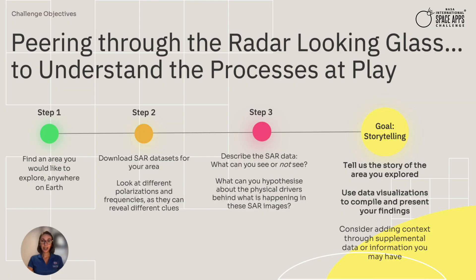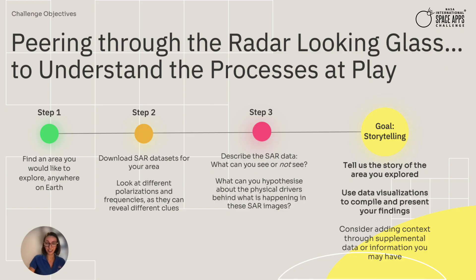So what does this challenge look like? First, you will need to decide which area of Earth you would like to explore. You could investigate an area you're already familiar with, like your hometown or a place you've visited in the past, or any other place that interests you — like a volcano that erupted recently, a forest that looks intriguing, a coastal area that has changed a lot since you were a kid, or even those farmlands you walk by every day. Wherever the rabbit hole may take you, just like Alice.